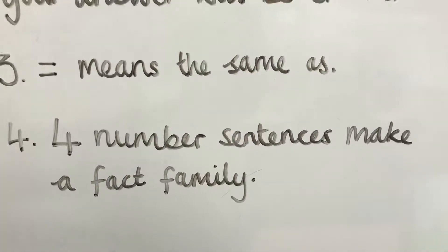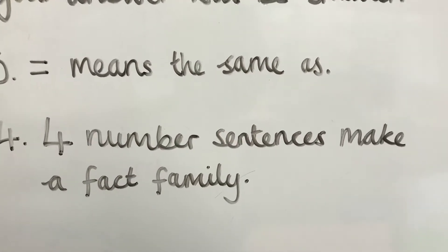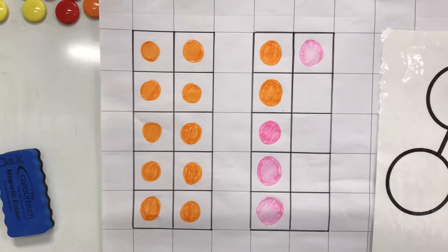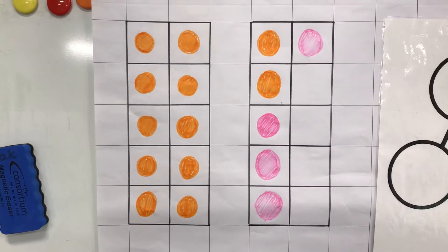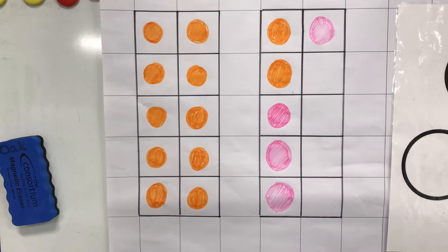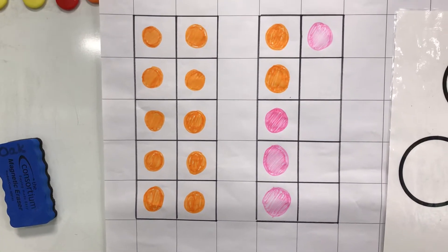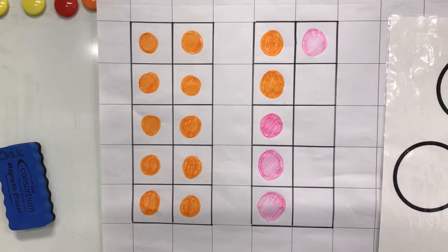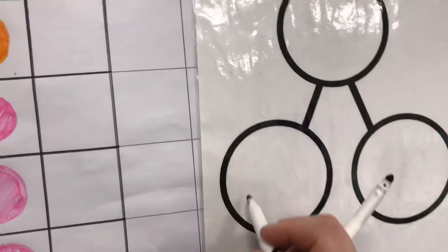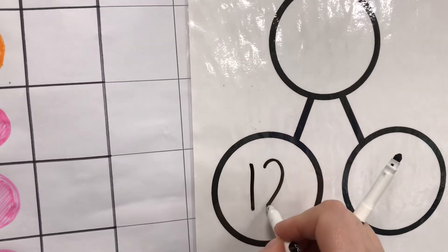So let's have a go at making our fact family and see what we can learn from it. Here's a 10 frame. I've got some orange counters on my 10 frame and I've got some pink on my 10 frame. So how many orange have I got? Well, I've got a whole 10 frame and two on the other 10 frame. So 10 and 2 is 12. I've got 12 orange counters.